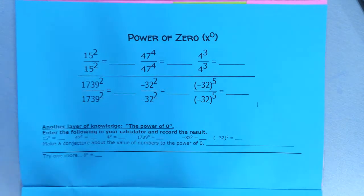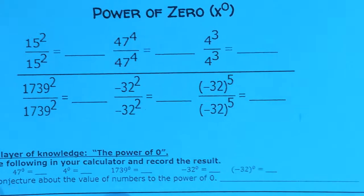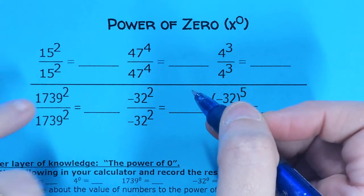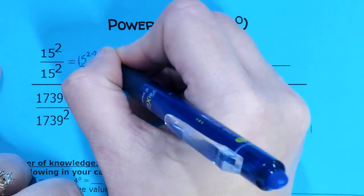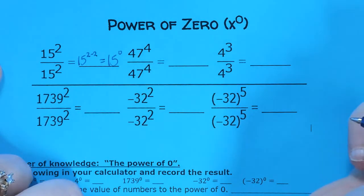We're going to explore this using the division rule. Using the quotient of powers rule to help us understand the power of zero. If I were to write this using my division rule, my quotient of powers rule, I would write 15 to the 2 minus 2, which works out to 15 to the 0 power.